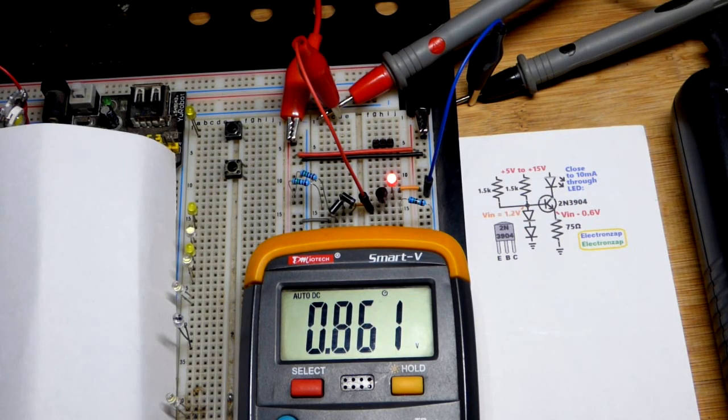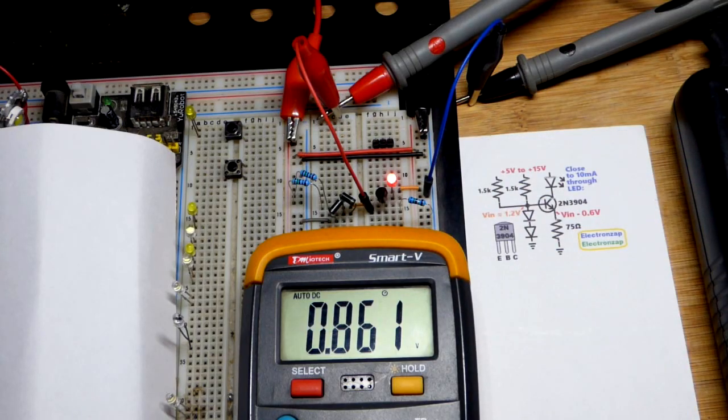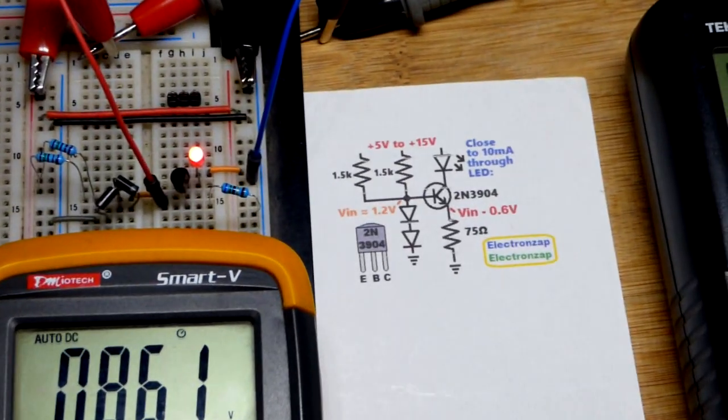Now we have the voltage across the 75 ohm resistor that sets the current through this. And it looks like 0.861, which is a little bit higher than I expected, but still kind of within estimation.